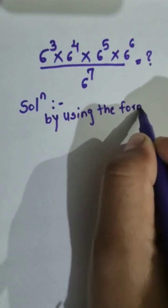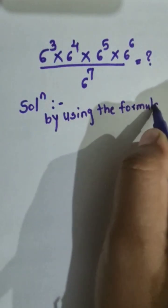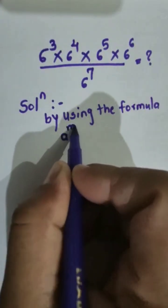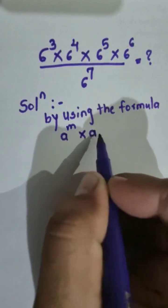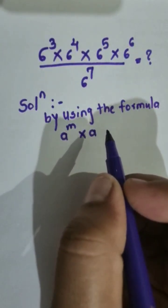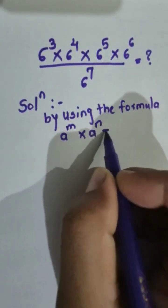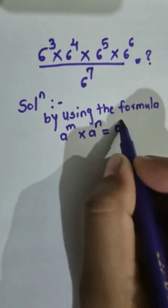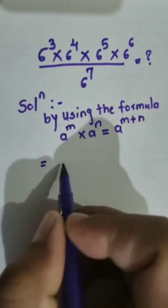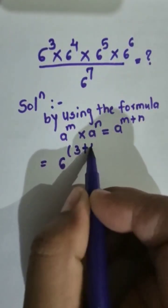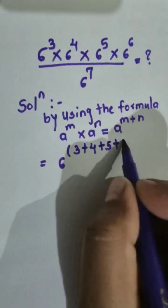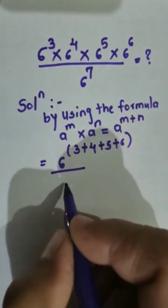By using the formula: a raised to m, into a raised to n, is equal to a raised to m plus n. Applying this formula here, we get 6 raised to (3 plus 4 plus 5 plus 6), divided by 6 raised to 7.